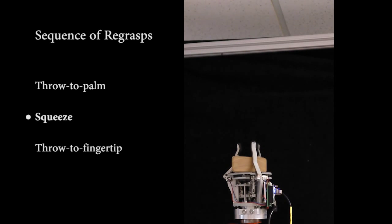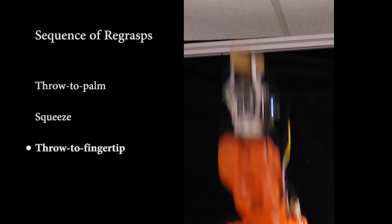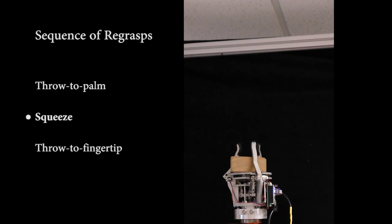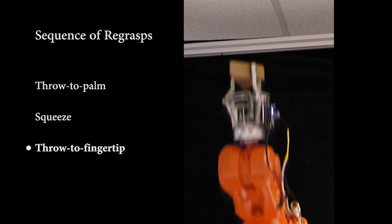A few of our dynamic regrasps, which transfer the object from an enveloping grasp to a fingertip grasp and back again, were shown to run in sequence 50 times in a row during our experiments.